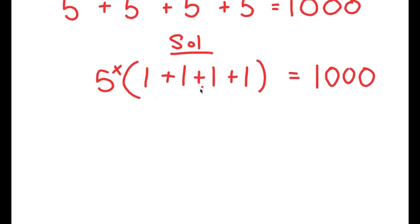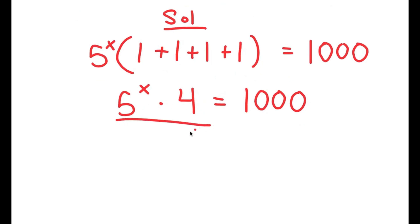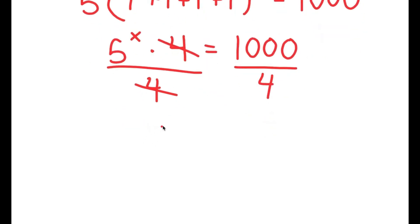And now, 1 plus 1 plus 1 plus 1 is 4, so I get 5 to the power of x times 4 is equal to 1,000. We want to isolate x, so I'm going to divide both sides by 4 — these two cancel out — and I get 5 to the power of x is equal to 1,000 divided by 4, which is 250.